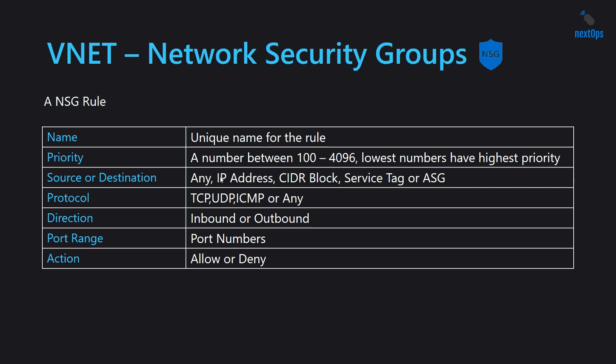Let's take a look at the NSG rule information. Each rule contains five-tuple information and a unique name, priority number, traffic direction, and finally the action to be taken — allow or deny. The rule name should be meaningful and descriptive to avoid confusion in the future. The rule with the lowest priority number has the highest priority. Source or destination can be an IP address, a CIDR block, a service tag, or an application security group. Protocol can be TCP, UDP, ICMP, or any. Direction defines whether traffic is inbound or outbound. Port range defines on which port you want to allow traffic, and action defines whether to allow or deny.